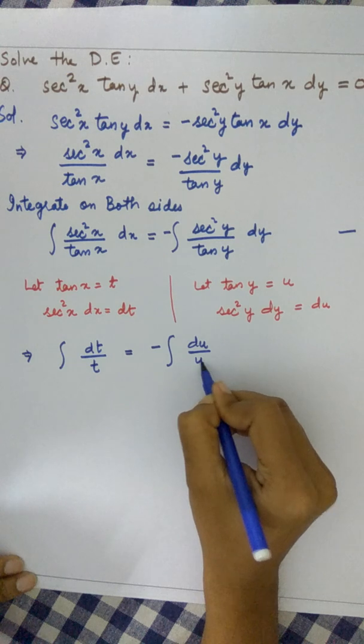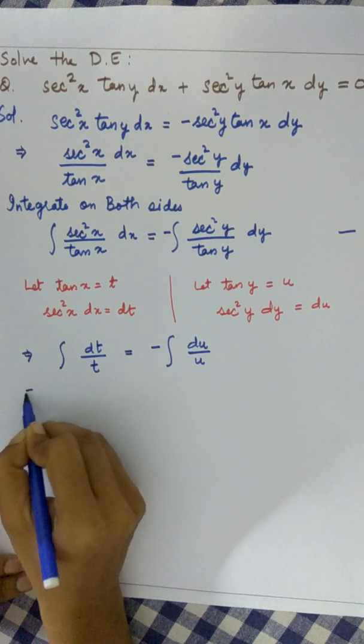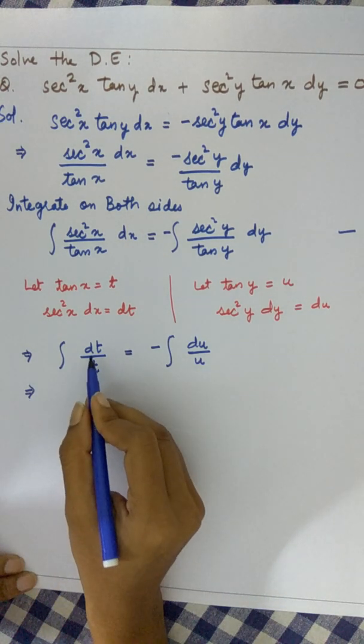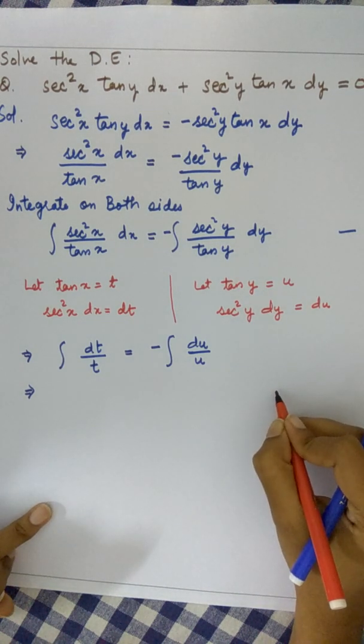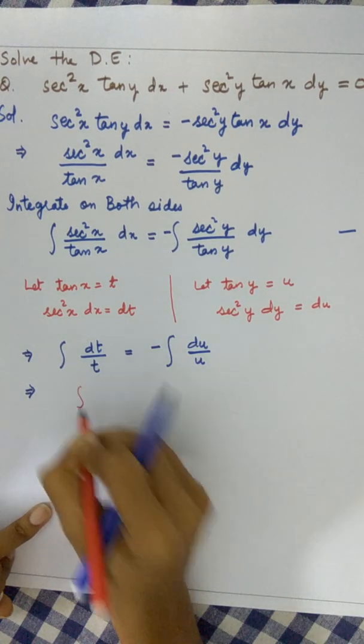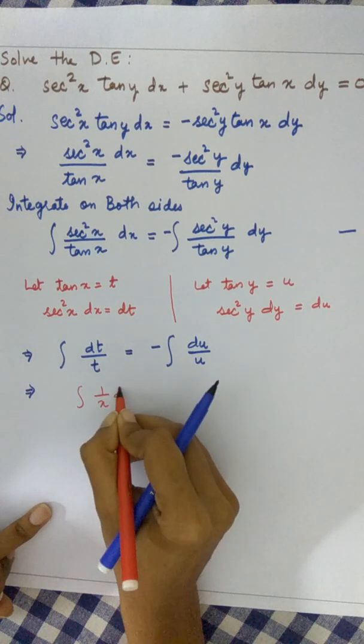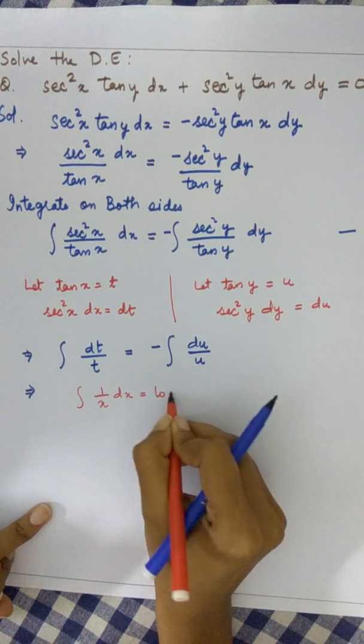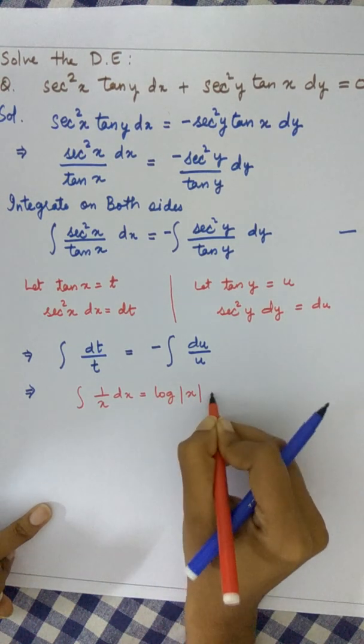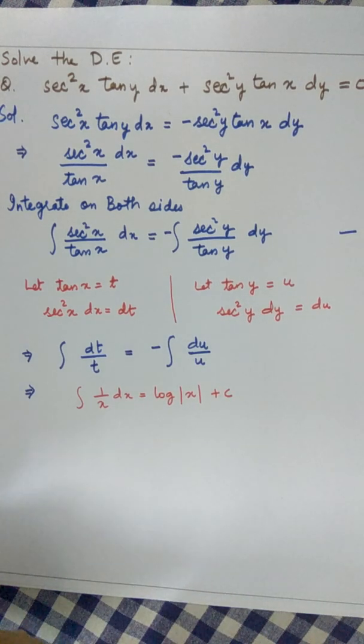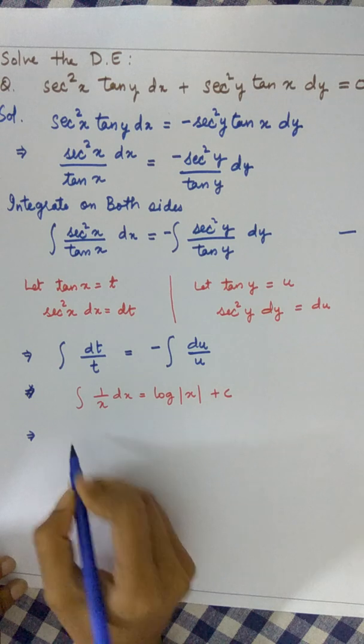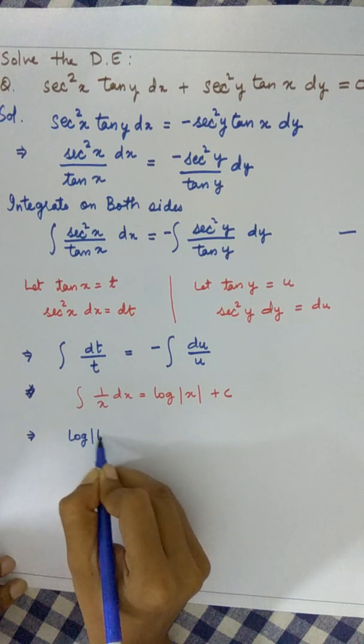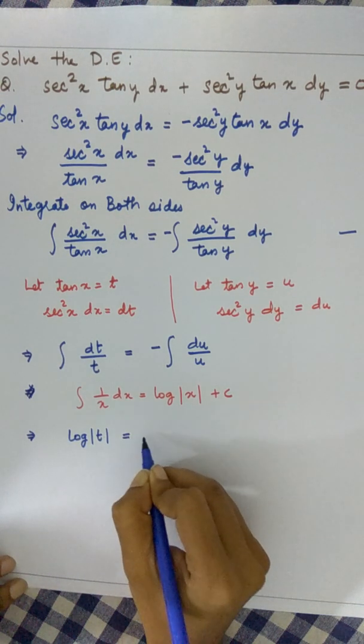We know that the integral of 1 over x dx equals log x plus c. Using this formula, we get log t equals minus log u plus c.